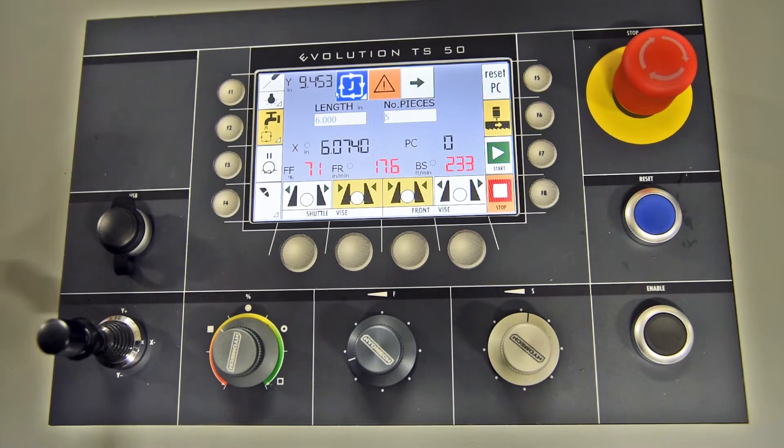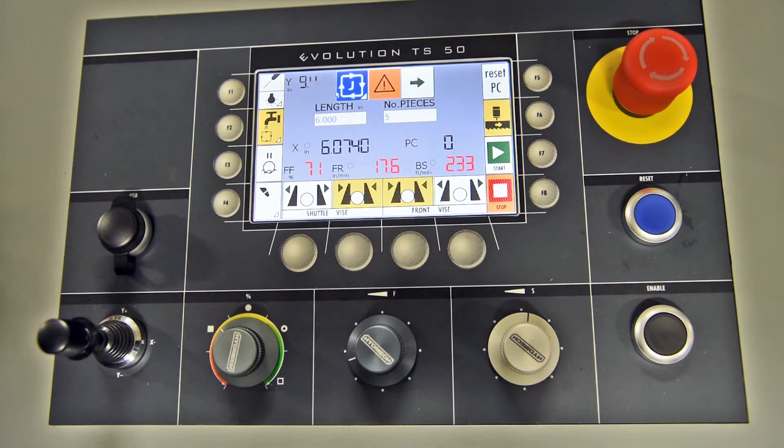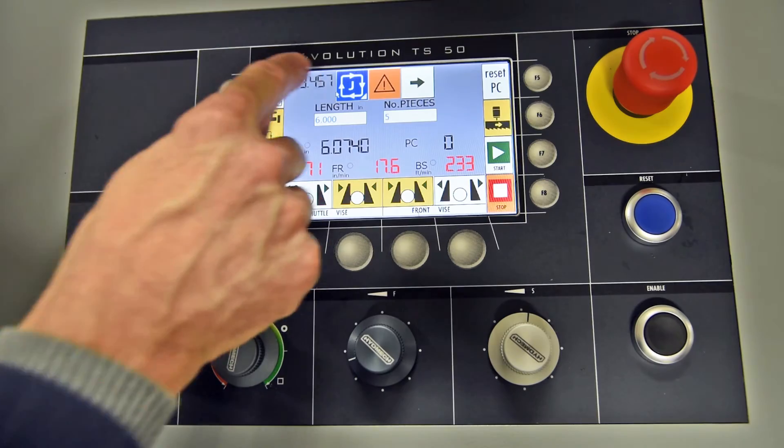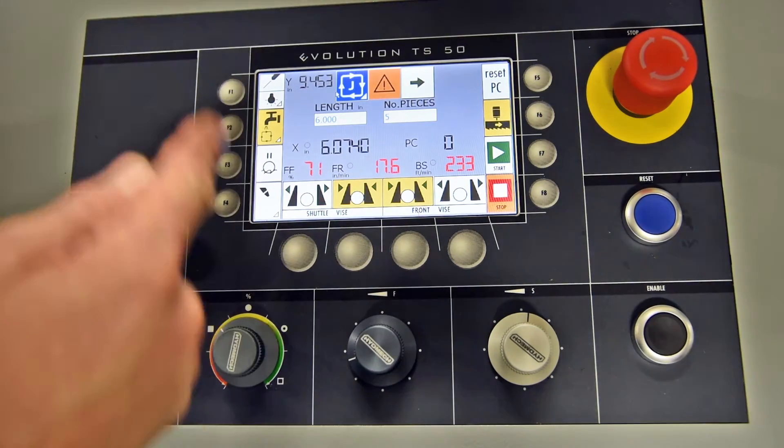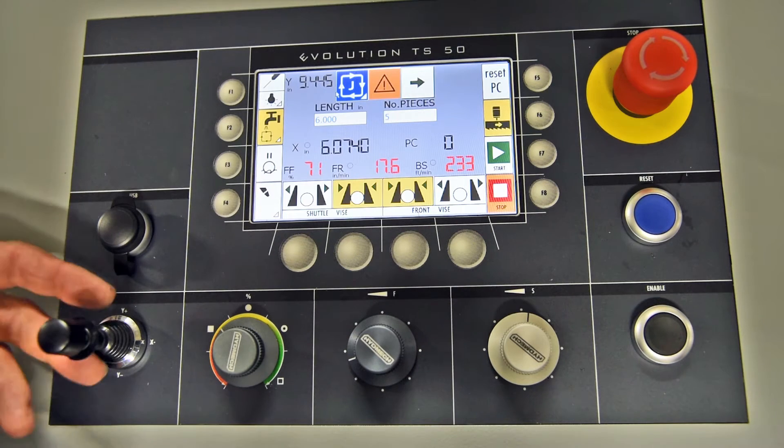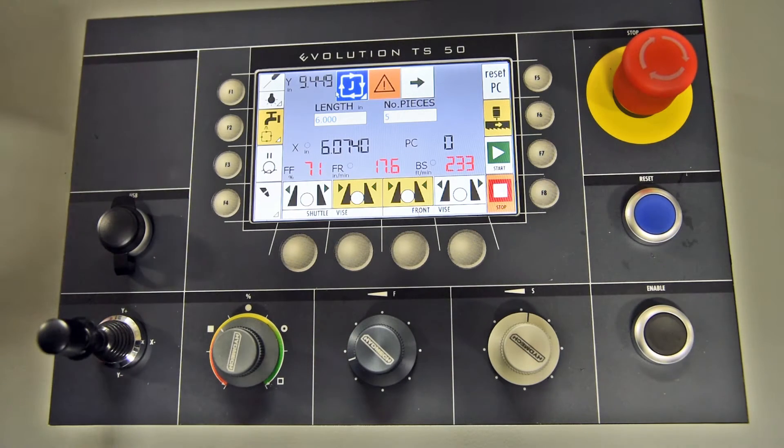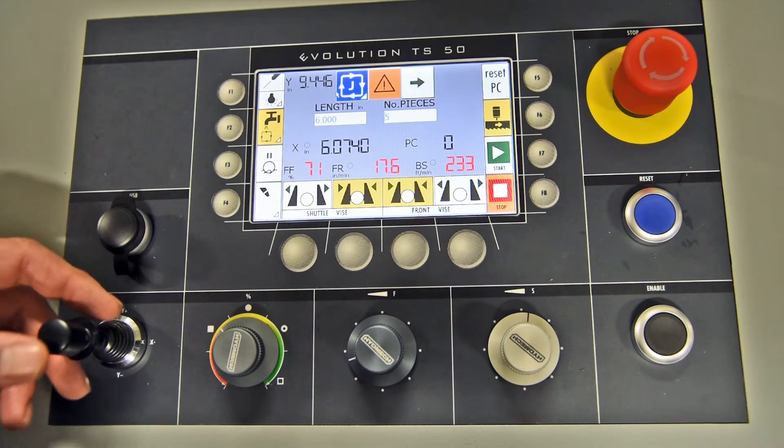We are going to adjust the head position in order to start my cycle. So what I would do at this point, as you can tell the Y axis is our head movement top to bottom, it is at 9.445. So what I need to bring it down to is around 3 inches or just above 3 inches, I am going to cut a 3 inch piece of material.